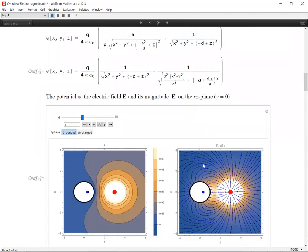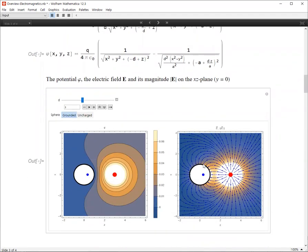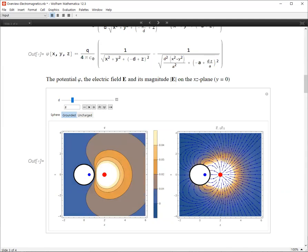Okay, using these formulas, you can plot the potential and electric field and the magnitude. So here we have a point charge here. And this blue dot is the image charge. And d is the distance. Here, d is equal to 3. And then if you change it, for example, if you put it closer to the sphere, you can see that the shape of the potential changes. And also, you can see the distribution of the electric field.